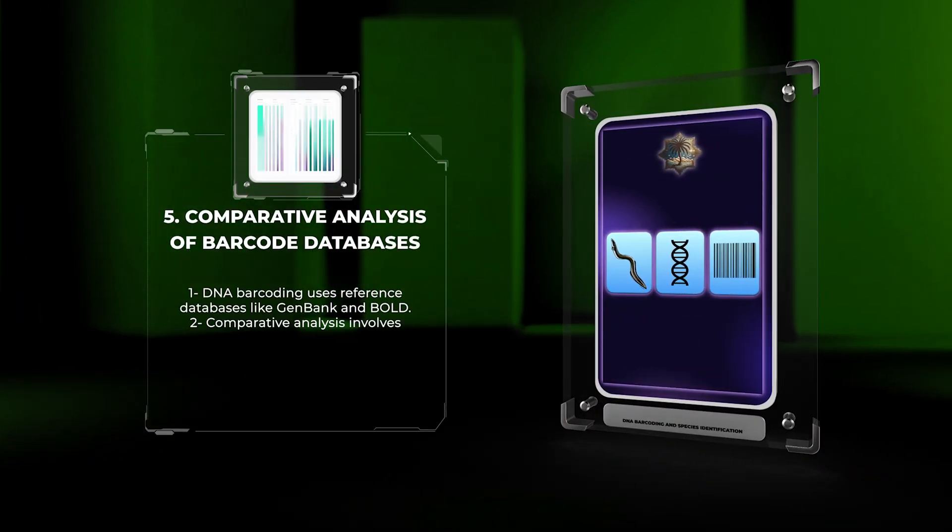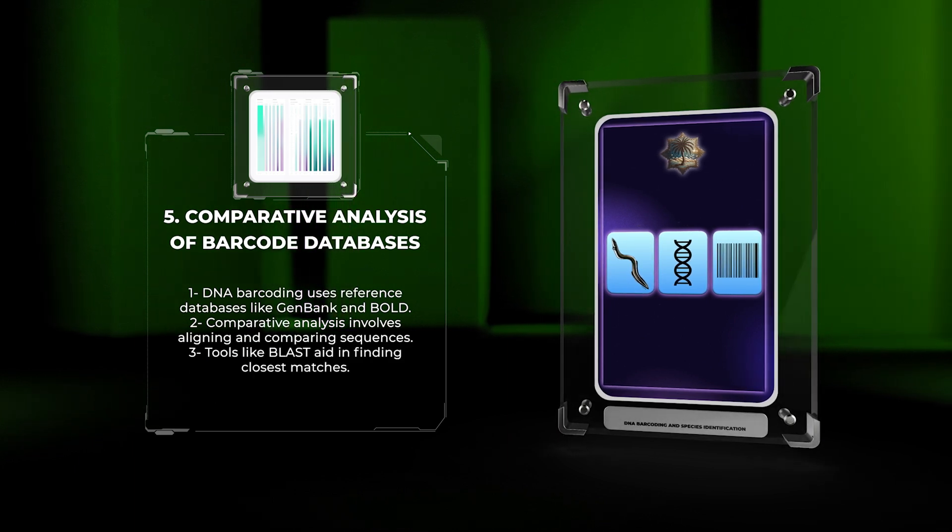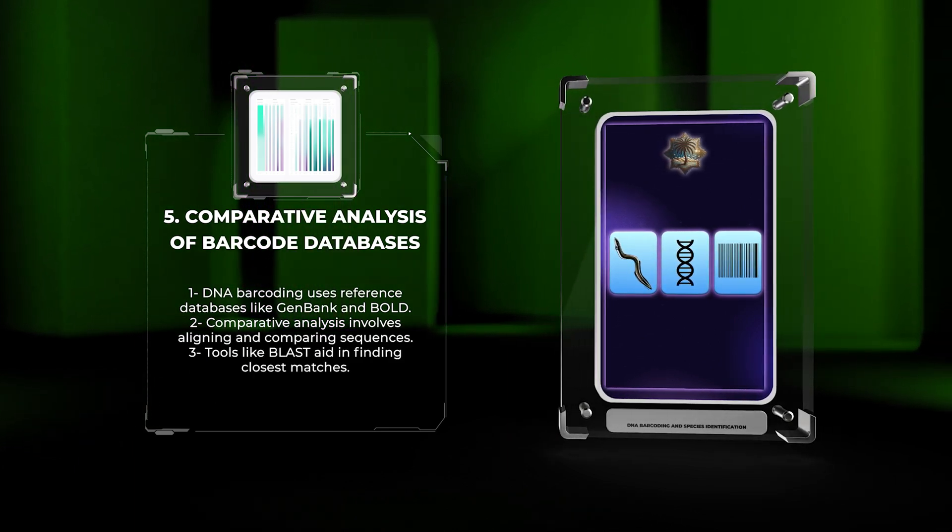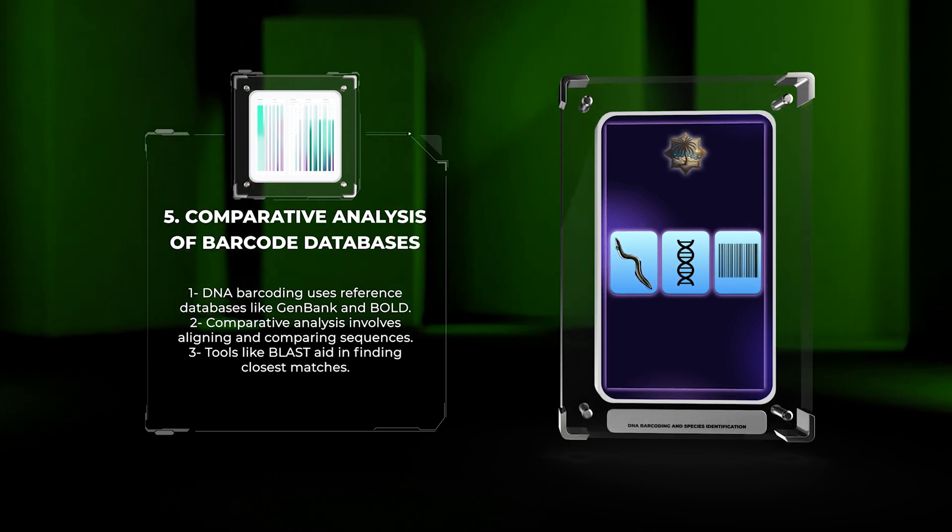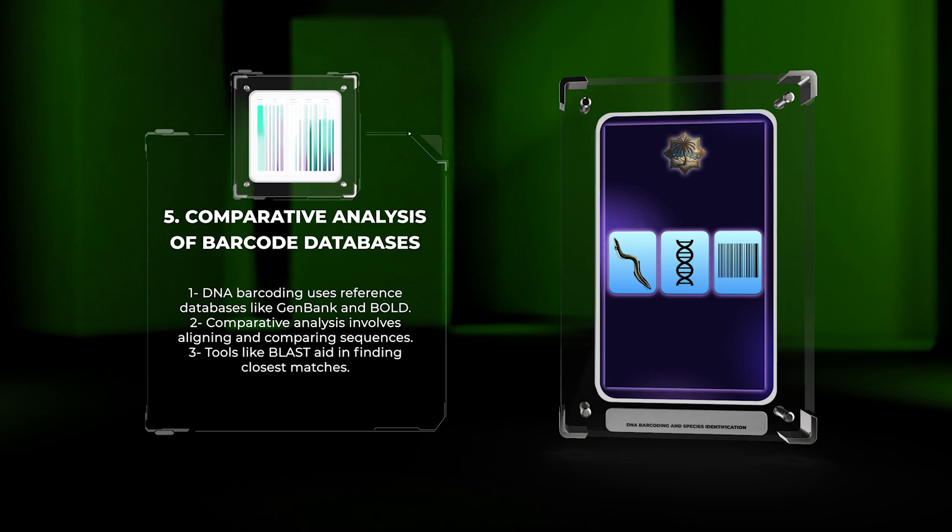DNA barcoding uses reference databases like GenBank and BOLD to identify species based on barcode sequences. Comparative analysis involves aligning and comparing sequences to find the closest matches, aided by tools like BLAST.